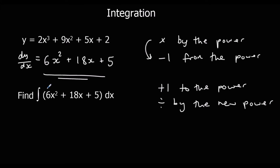So now we're going to integrate this. It says find the integral — this symbol means find the integral — so find the integral of 6x squared plus 18x plus 5. That's what we've got here: what we got by differentiating with respect to x.